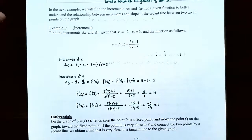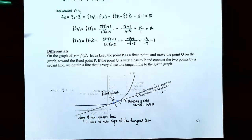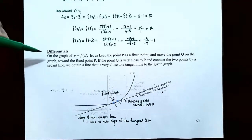The y values change by 15 units between y1 and y2. The previous problem gave us an idea of how to calculate increments — it's just the numerator and denominator for the average rate of change or slope of the secant line. Now we're going to talk about differentials.